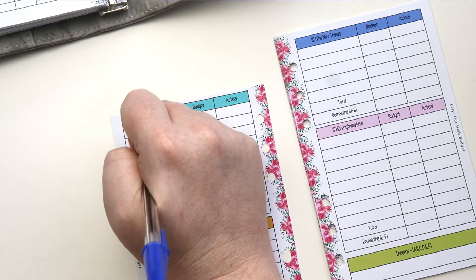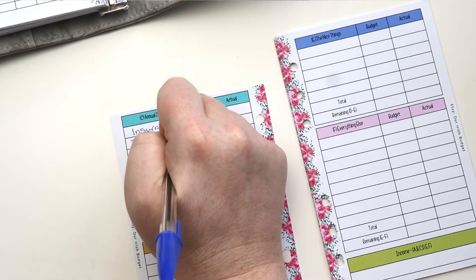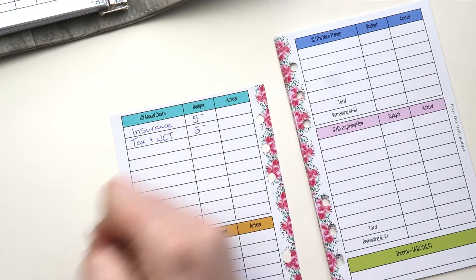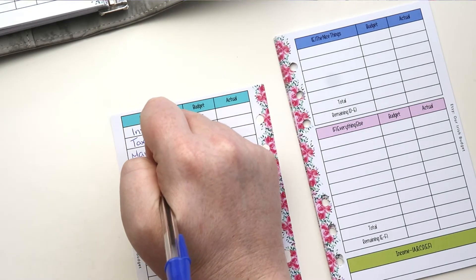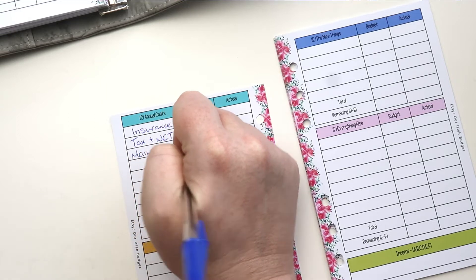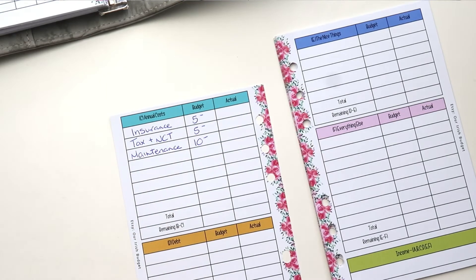We have road tax and an annual car test that we have to pay for. And again, five euro goes in there. We have the repair kind of fund for the car and the motorbike. We put 10 euros in there.